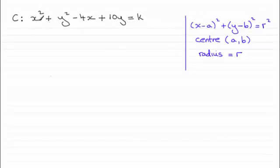And we do that by completing the square over the x terms and the y terms. So if we look at x squared minus 4x first of all, and complete the square on that,